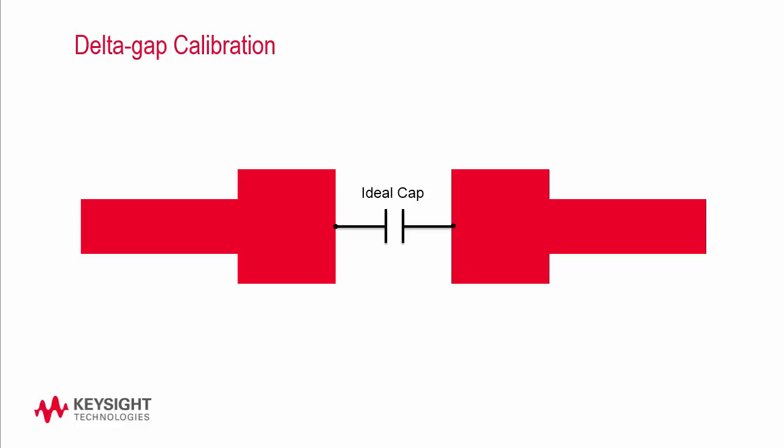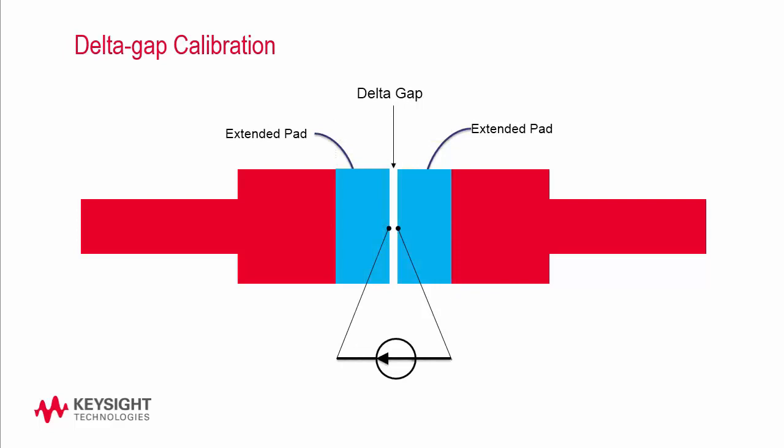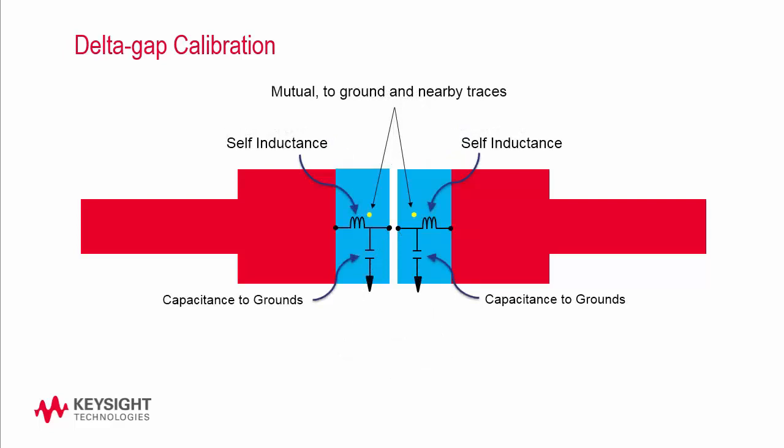Now let's talk about the next calibration technique: Delta Gap. Suppose you have an ideal capacitor you'd like to attach to the layout. In the actual layout, there are two pads for this capacitor, yet the gap or distance between the pads is not properly modeled in the ideal capacitor. Therefore, the end result may not be accurate. Delta Gap will add additional lines between the two pads with an infinitesimally small gap where the source will be attached. By doing so, the self and mutual inductance to the grounds, as well as to the nearby traces, will be included in the model. The capacitance to the grounds will also be part of the model. Delta Gap calibration is designed to attach the DUT with ideal components which do not include parasitics in their model. Hence, these parasitics are included by the Delta Gap calibration in the model of the DUT.